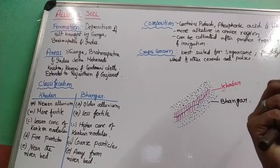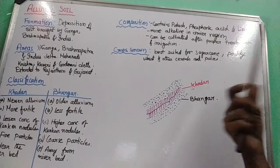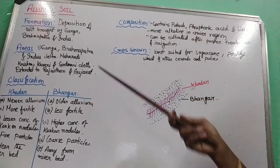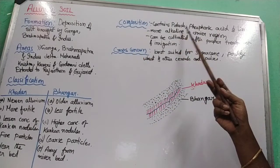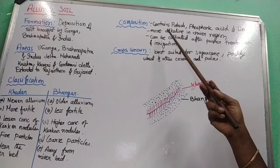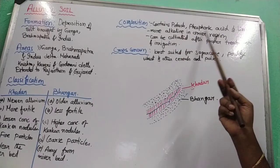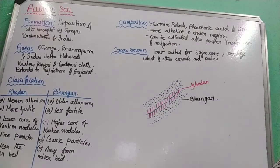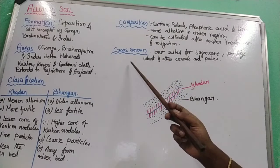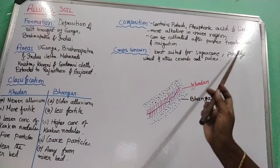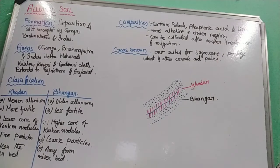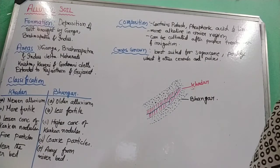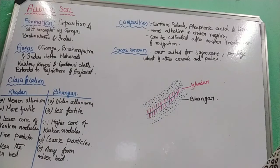The composition of alluvial soil includes potash, phosphoric acid, and lime. It is more alkaline in drier regions and can be cultivated after proper treatment and irrigation. This soil is best suited for sugarcane, paddy, wheat, and other cereals and pulses. Apart from that, it is so fertile that almost any type of crop can be grown in it.